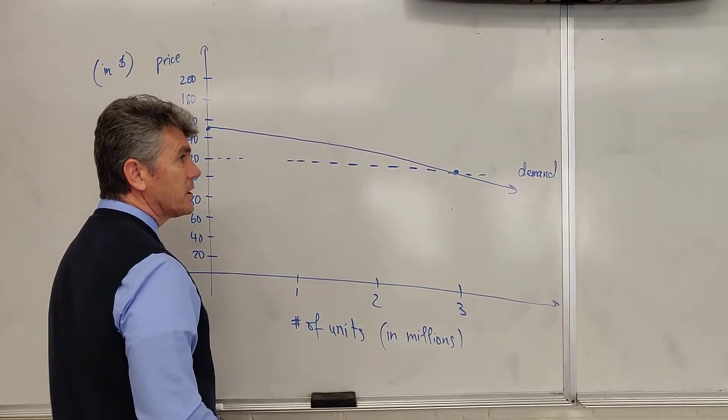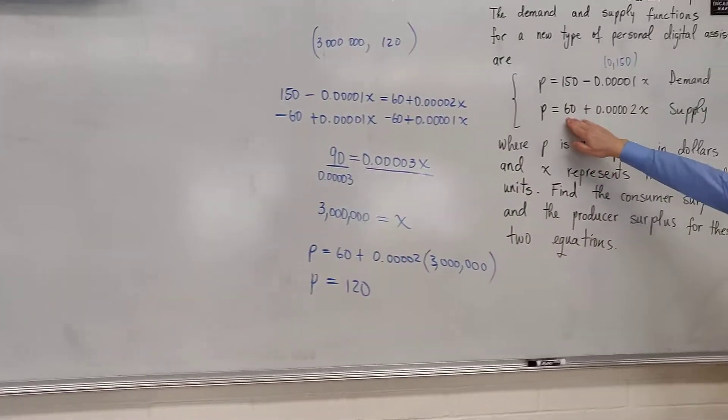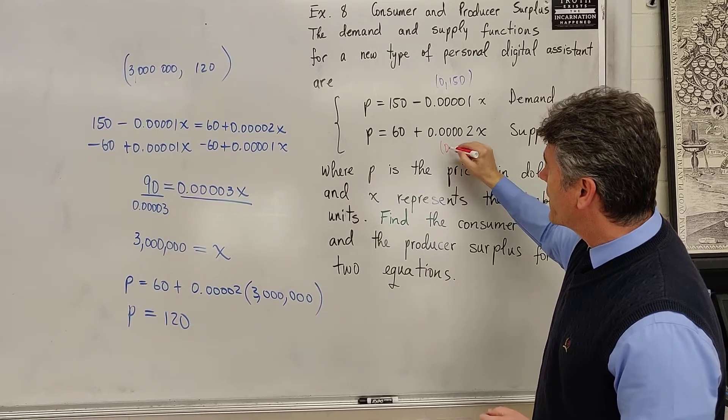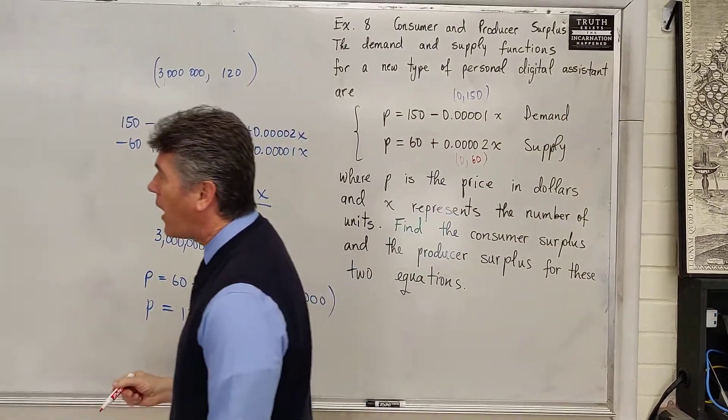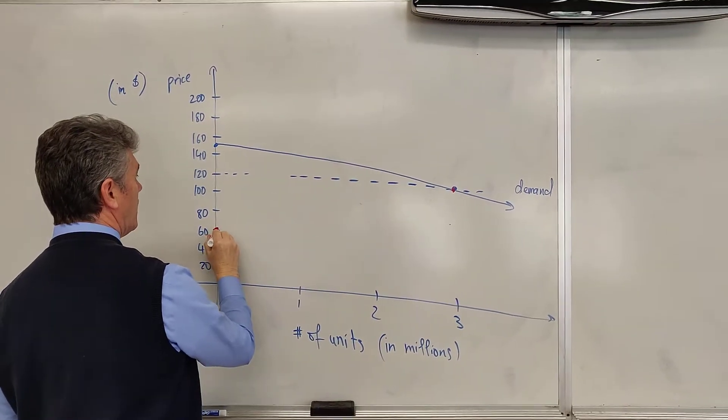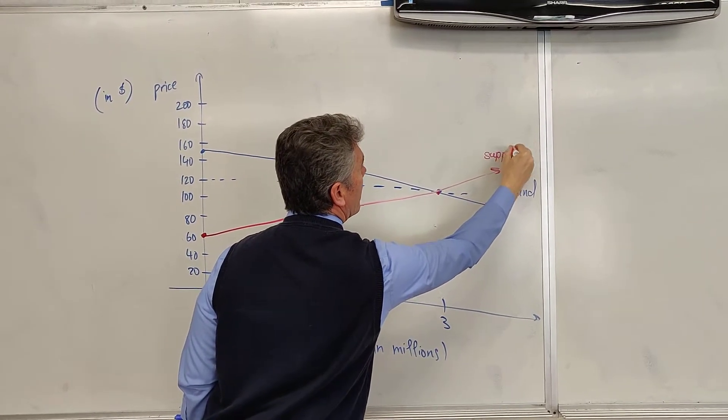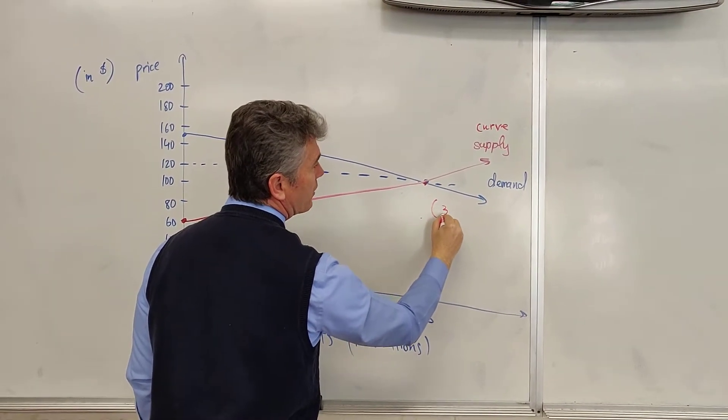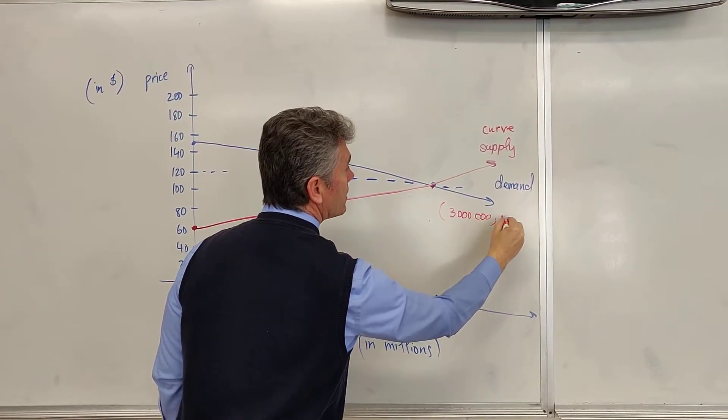Now I'm going to move on to the supply curve. For the supply curve, we notice that our y-intercept is the point (0, 60). We're going to also use the point (3 million, 120). To the best of our ability, we draw the supply curve.